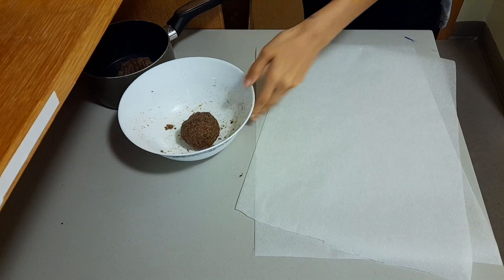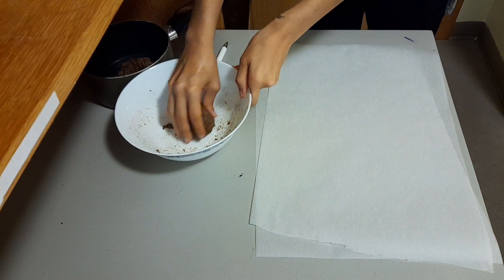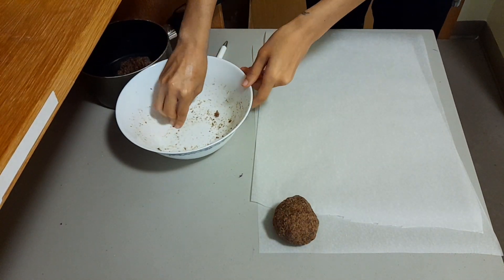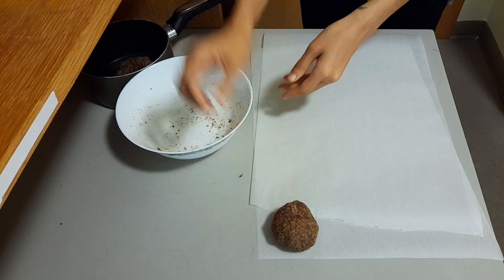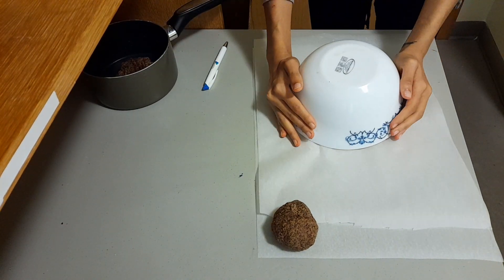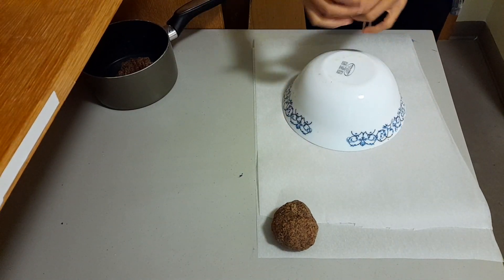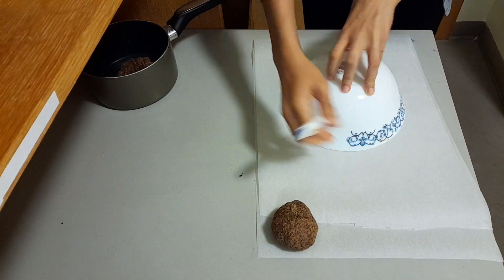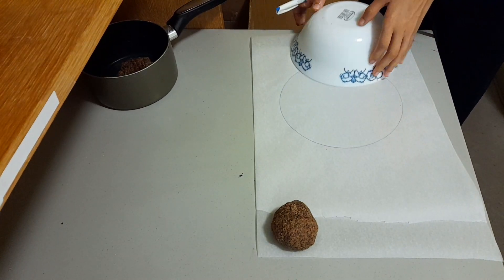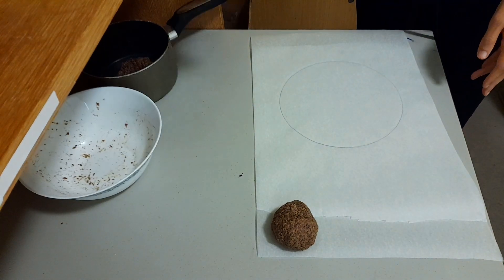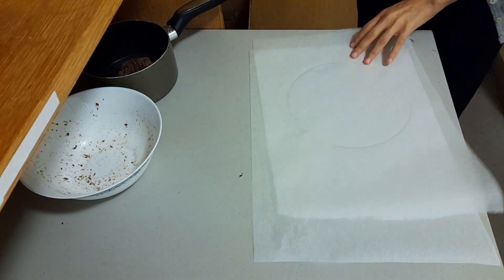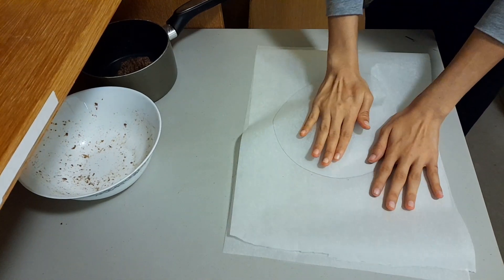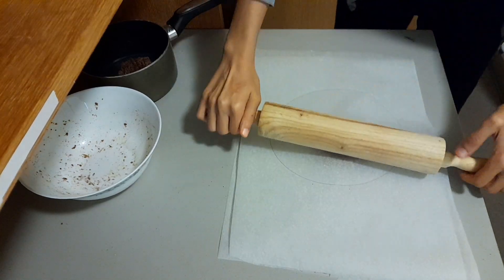To roll out the dough, you'll need two pieces of parchment paper. I like to outline the shape and size I'm aiming for on the upper parchment paper so I know when I've achieved it. In this case, I'm using an 8 inch wide bowl to outline. Next, add your dough in between your parchment paper and start rolling it out until you achieve your desired size.